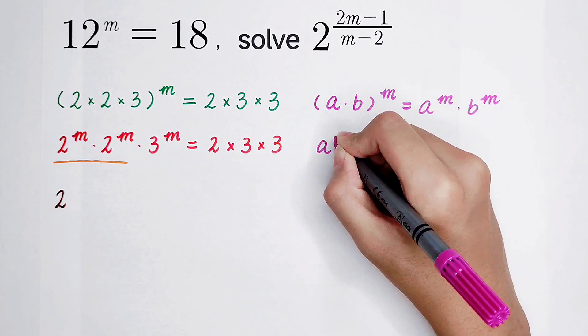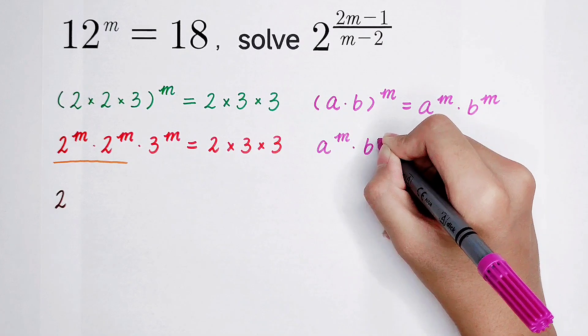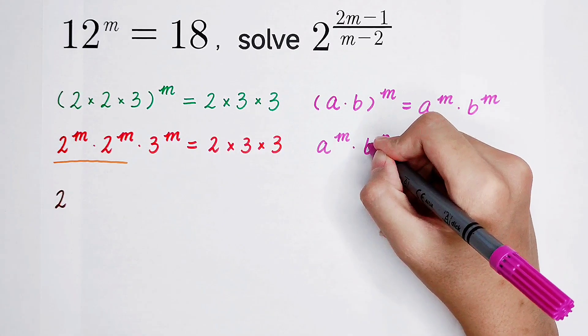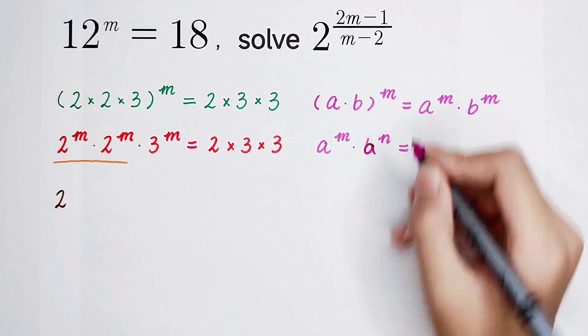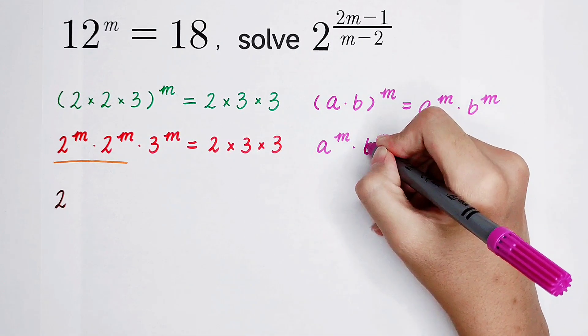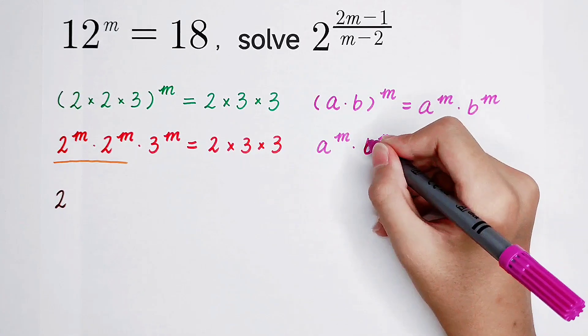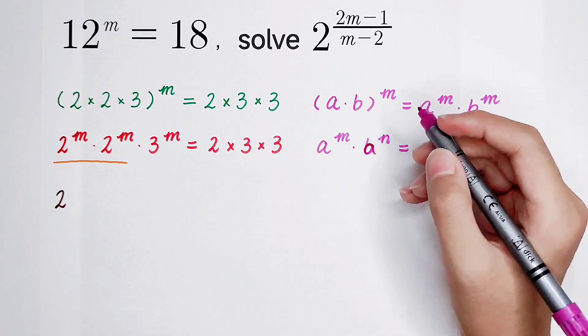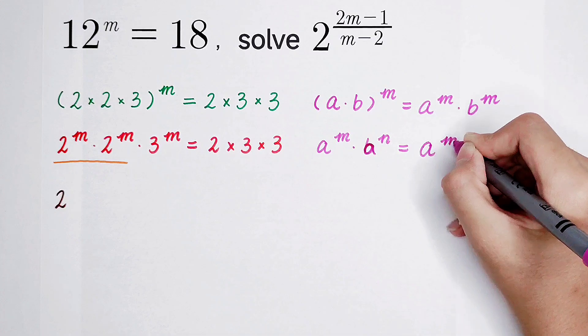a to the power m, then times a to the power m. It is equal to... oh sorry, here is a. I think my brain is old. a to the power m, then times a to the power m. So it is a to the power m plus m.